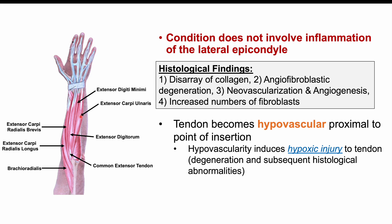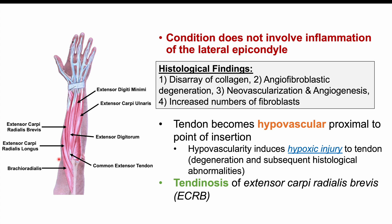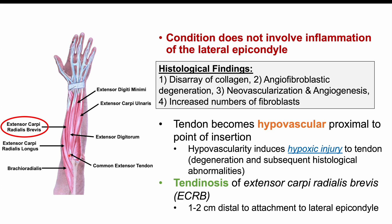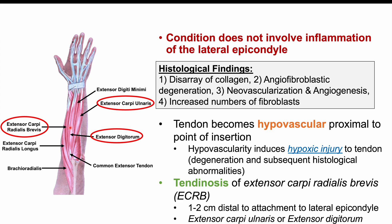Looking at the muscles of the posterior forearm, the primary muscle affected is the extensor carpi radialis brevis, which inserts at the humeral lateral epicondyle. Hypovascularity is most pronounced one to two centimeters distal to that attachment site. Other muscles proposed to be affected include the extensor carpi ulnaris and the extensor digitorum, both of which connect back to the lateral epicondyle via the common extensor tendon.